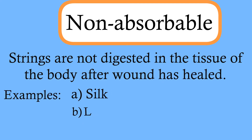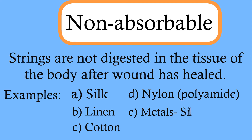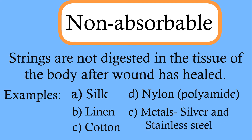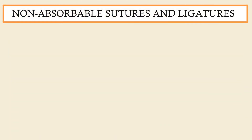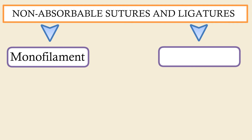Examples of non-absorbable sutures and ligatures are silk, linen, cotton, nylon, polyamide, and some metals like silver and stainless steel. The non-absorbable sutures and ligatures are further classified into monofilament and braided type.